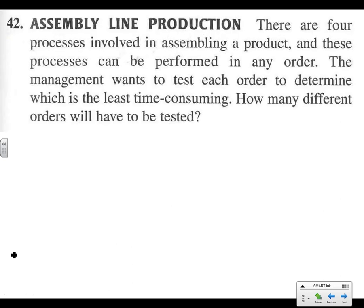Problem 42: there are four processes involved in assembling a product and these processes can be performed in any order. Management wants to test each order to determine which is the least time consuming. How many different orders will have to be tested? There are four processes, so we start with 4 in the first spot.